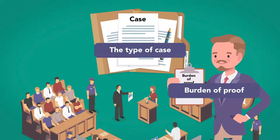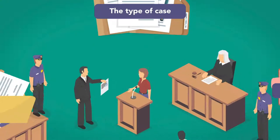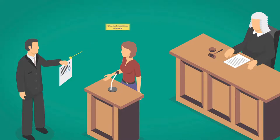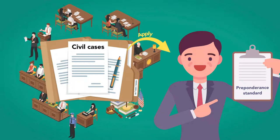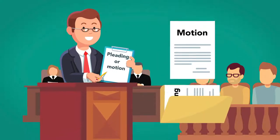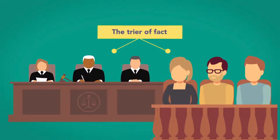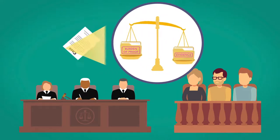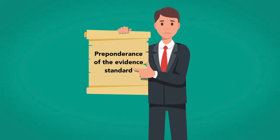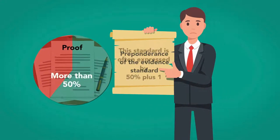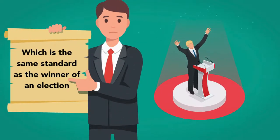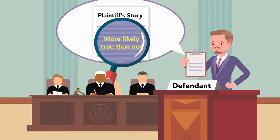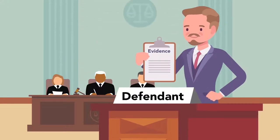Depending on the type of case, the burden of proof for a case, pleading, or motion will be either the standard of preponderance of the evidence or clear and convincing evidence. Most civil cases apply the preponderance standard. The party bringing the pleading or motion needs to meet or exceed this burden to prevail. The trier of fact — the jury or the judge — decides whom and what to believe and how to assess the cumulative amount of all of the evidence and testimony. At the end of the case, the trier will weigh the evidence in relation to the burden of proof required. The preponderance of the evidence standard is proof by more than 50% probability, often expressed as 50% plus one — the same standard as the winner of an election. Another way of stating this is that the trier of fact has to find that the plaintiff's story is more likely true than not as proved by the evidence presented at trial or in pretrial motions.